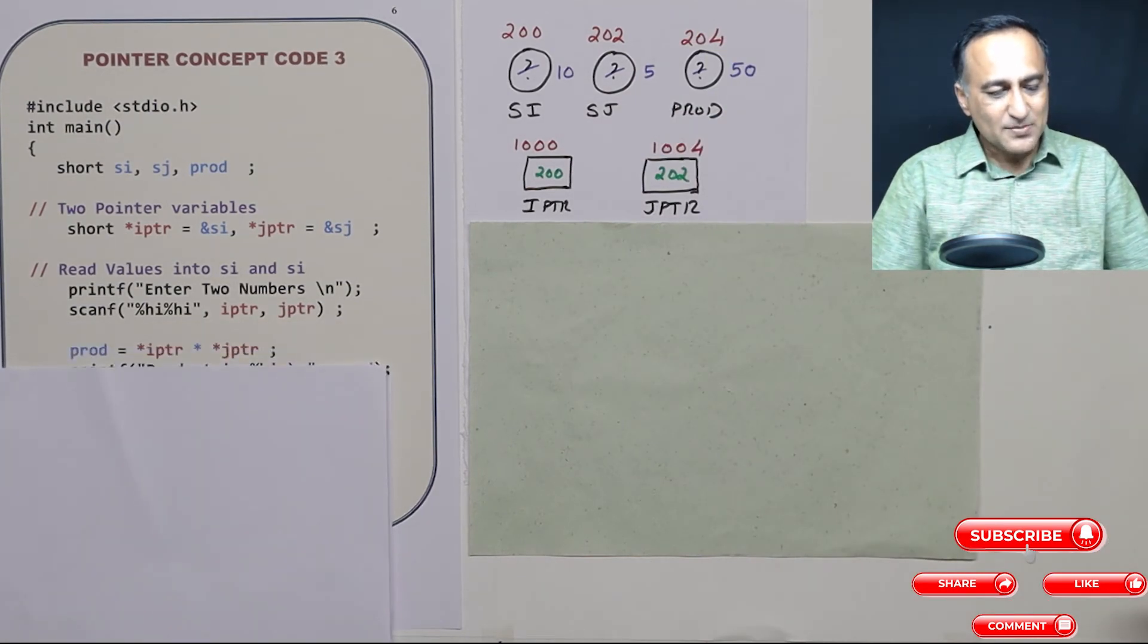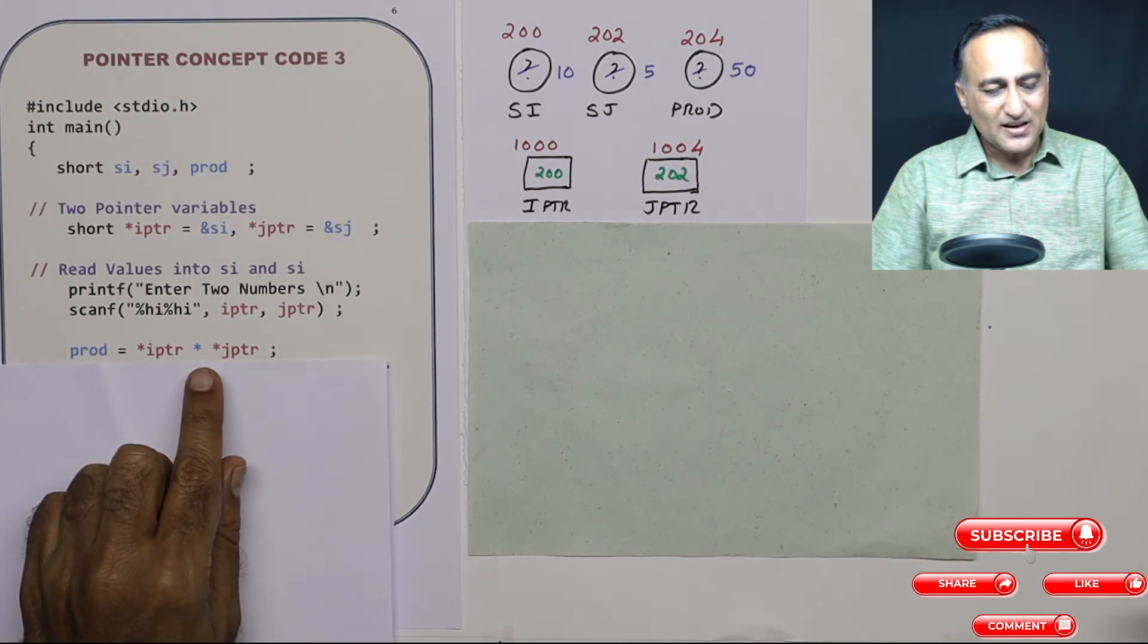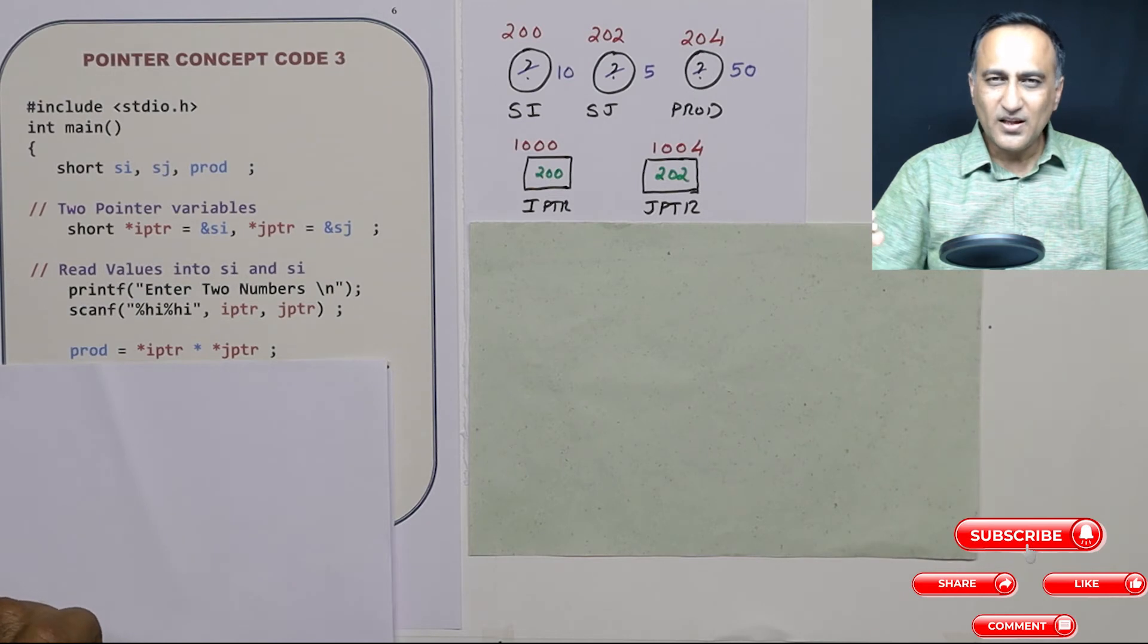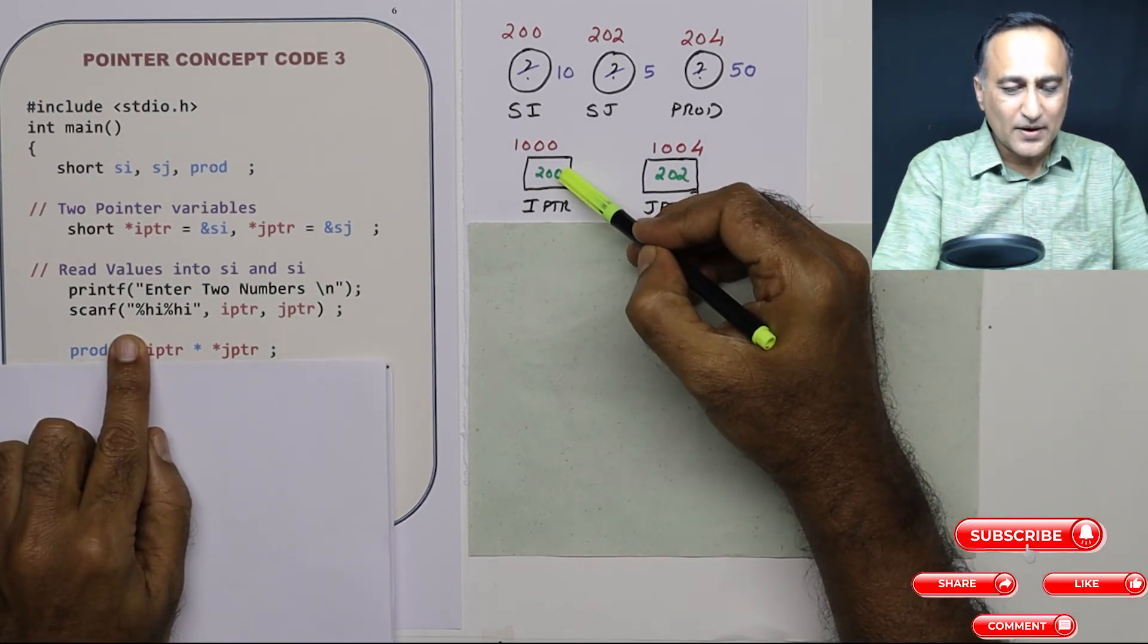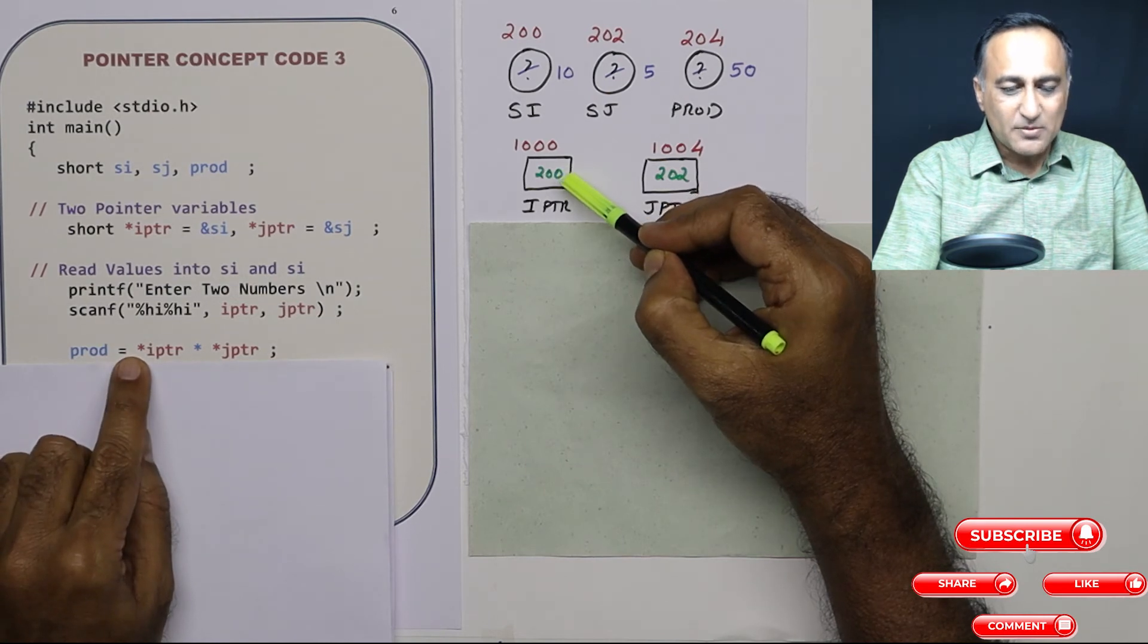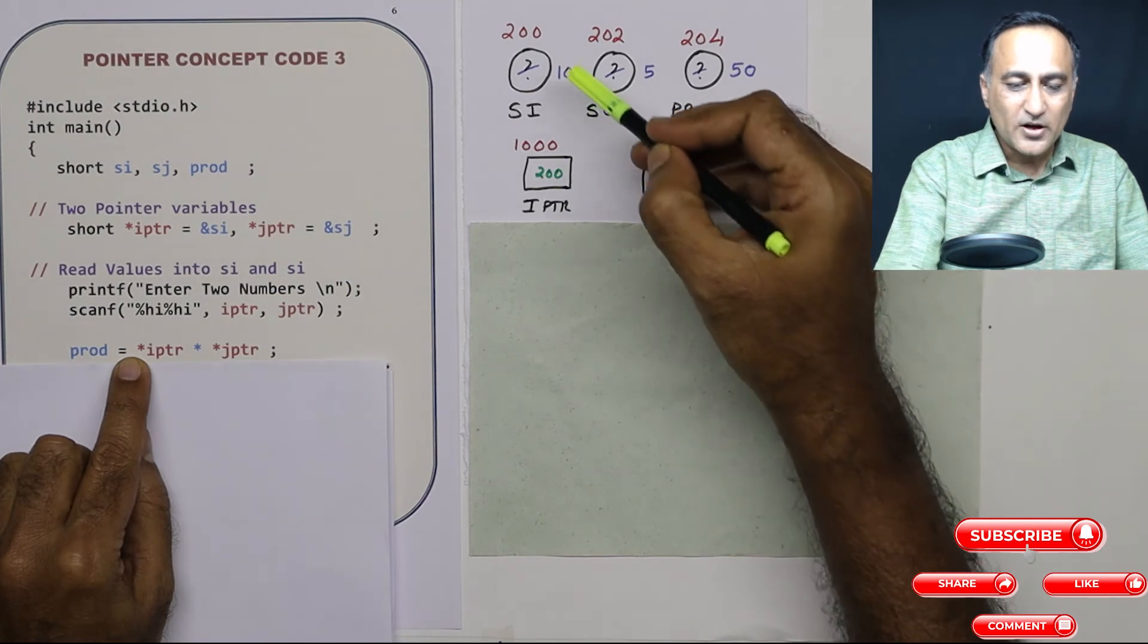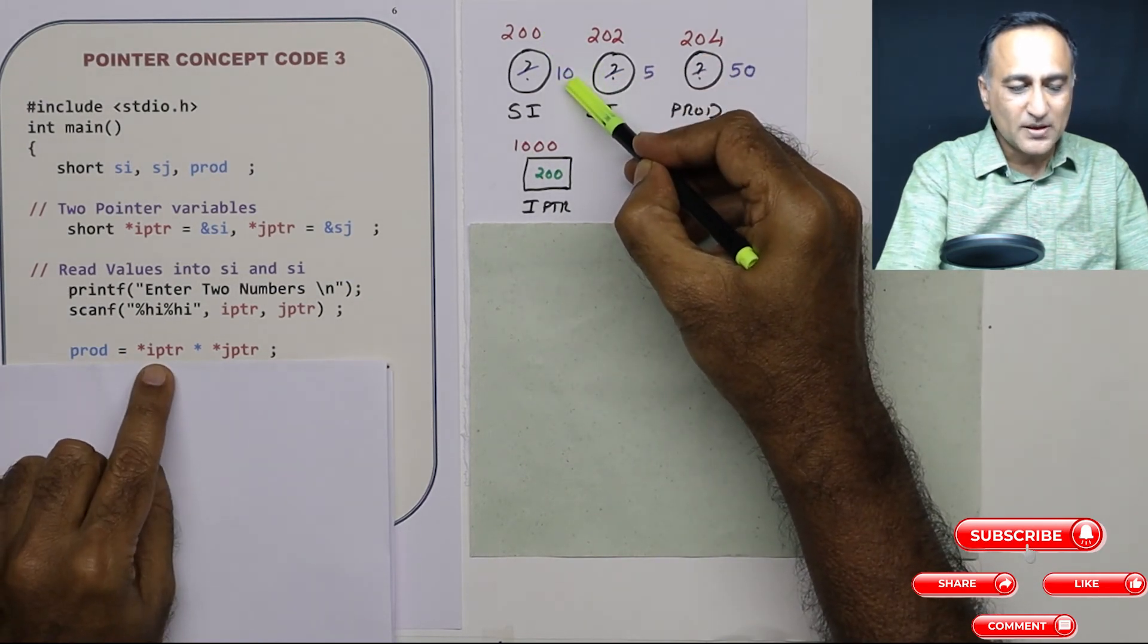Now next step, what I am doing is I am saying prod is assigned star IPTR multiplied by star JPTR. Nothing to really worry here. IPTR stands for 200. Star IPTR means what is the content or what is the value at address 200? Value or content at address 200 is 10. So this will be replaced by 10.